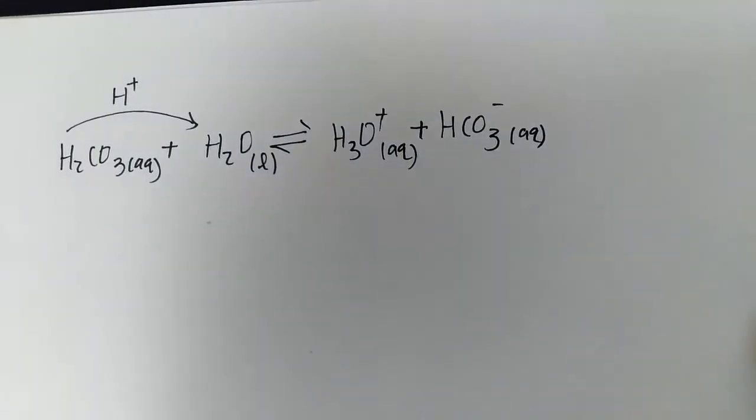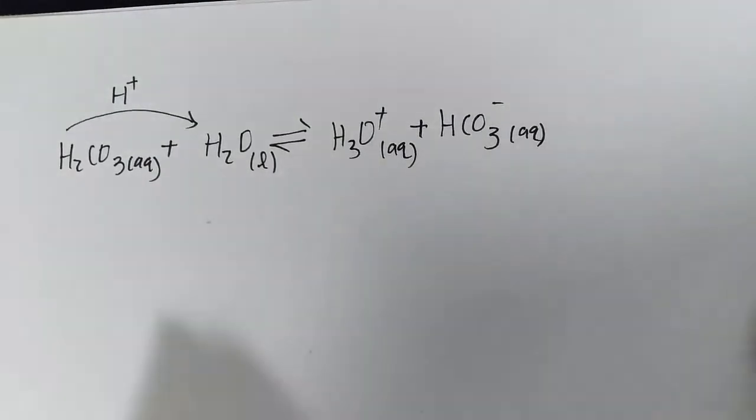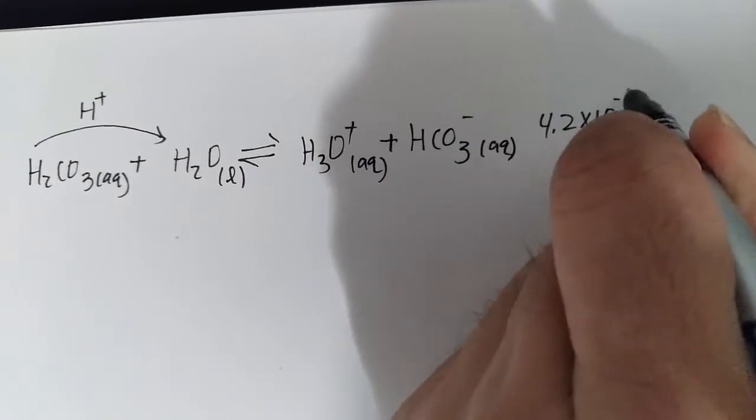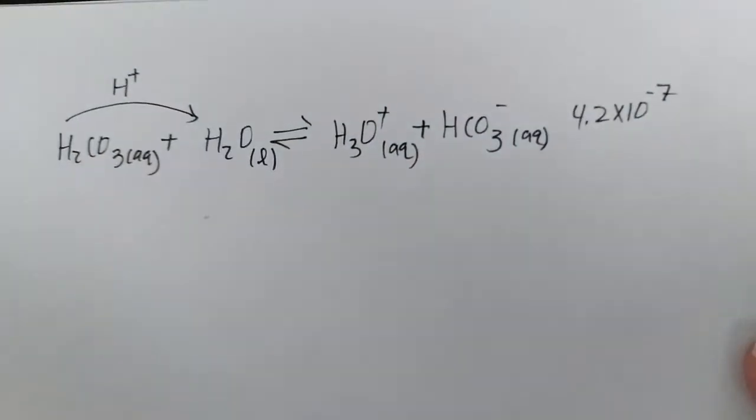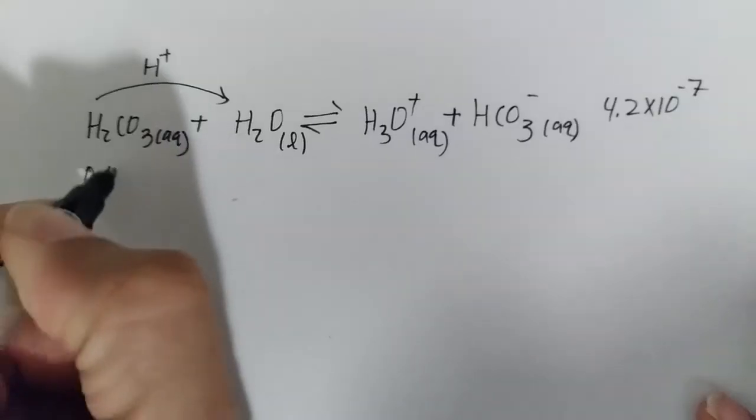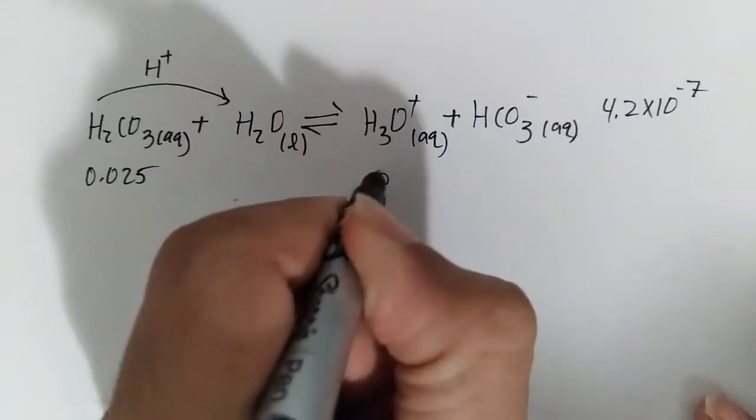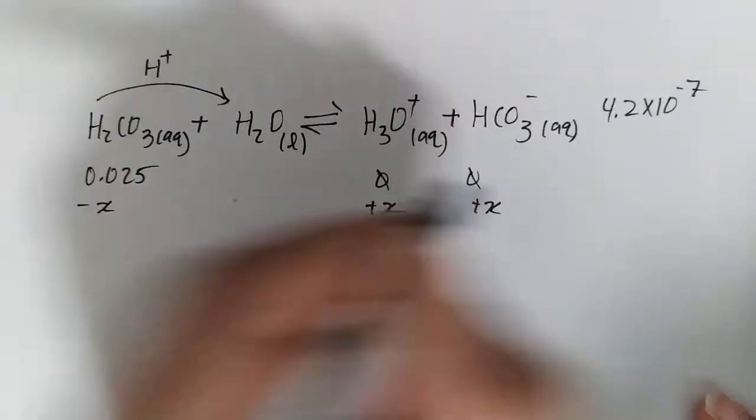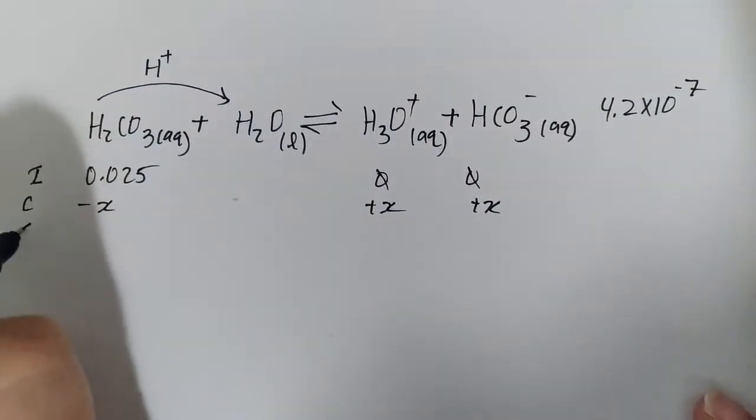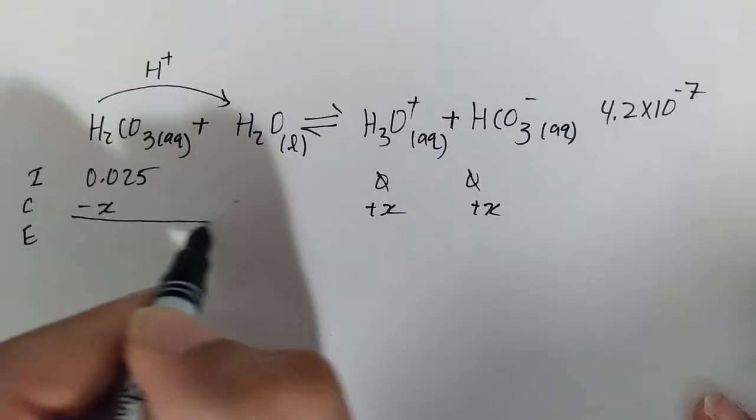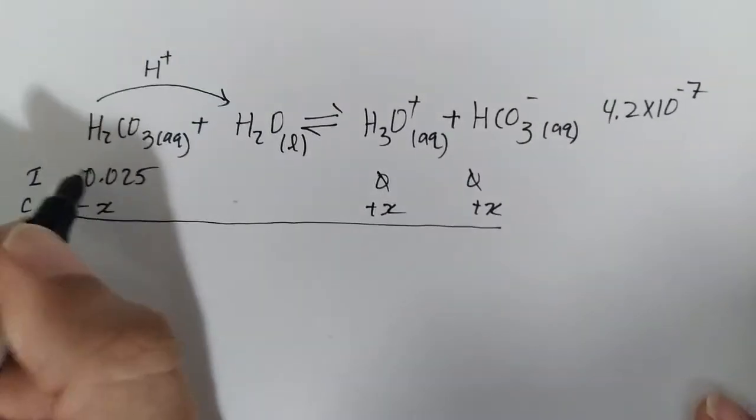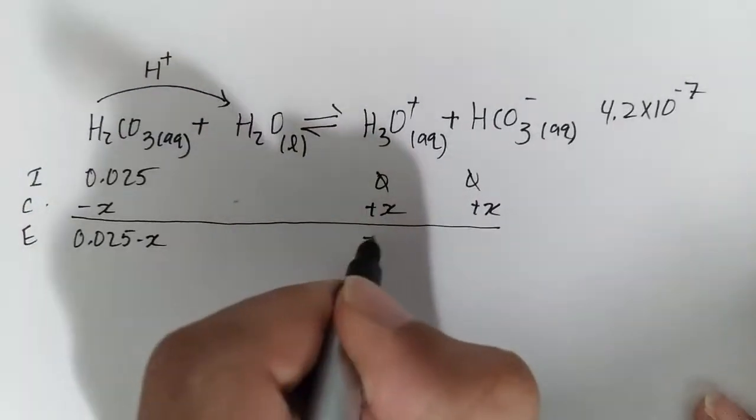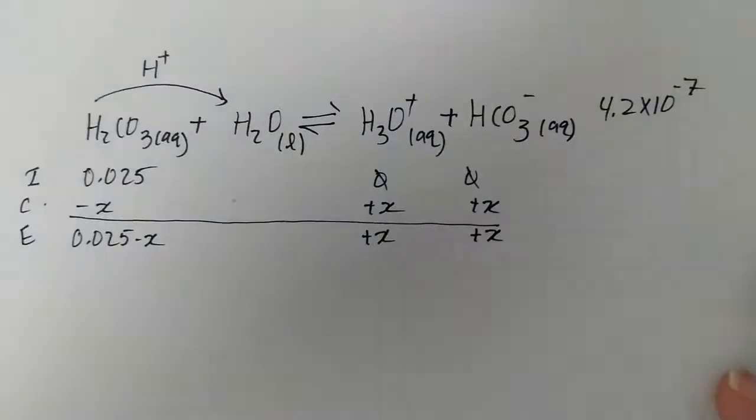We look this up of carbonic acid, 4.2 × 10^-7. That's a very small number. I'm pretty sure my ionization assumption will be valid, 0.025. Some of it goes this way and how much is what we want to figure out in our ICE table. At equilibrium, initial change equilibrium, we have 0.025 - x, we have +x and then we have +x.